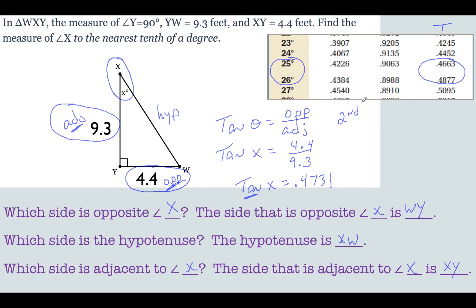The tangent button. You should try this on your calculator if you have one. Type in 0.4731. Hit enter. X is equal to 25.31 degrees. But this is as near as a tenth of a degree. So I'm going to show you how to do this on the arc sine calculator.